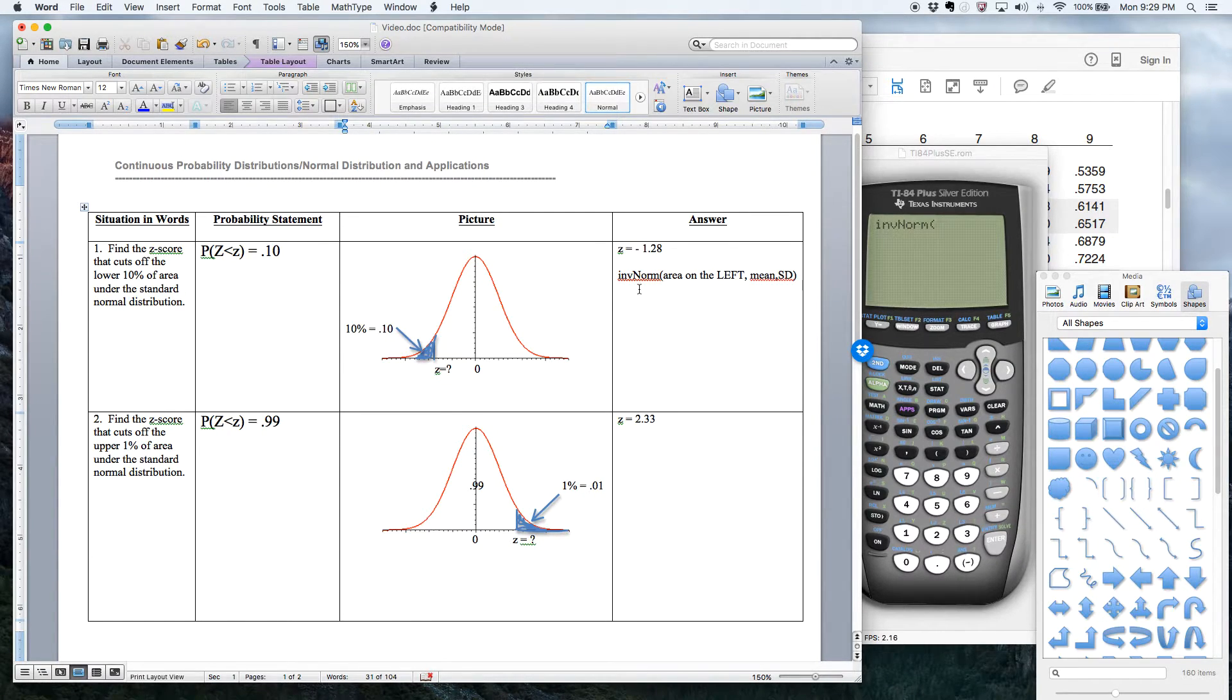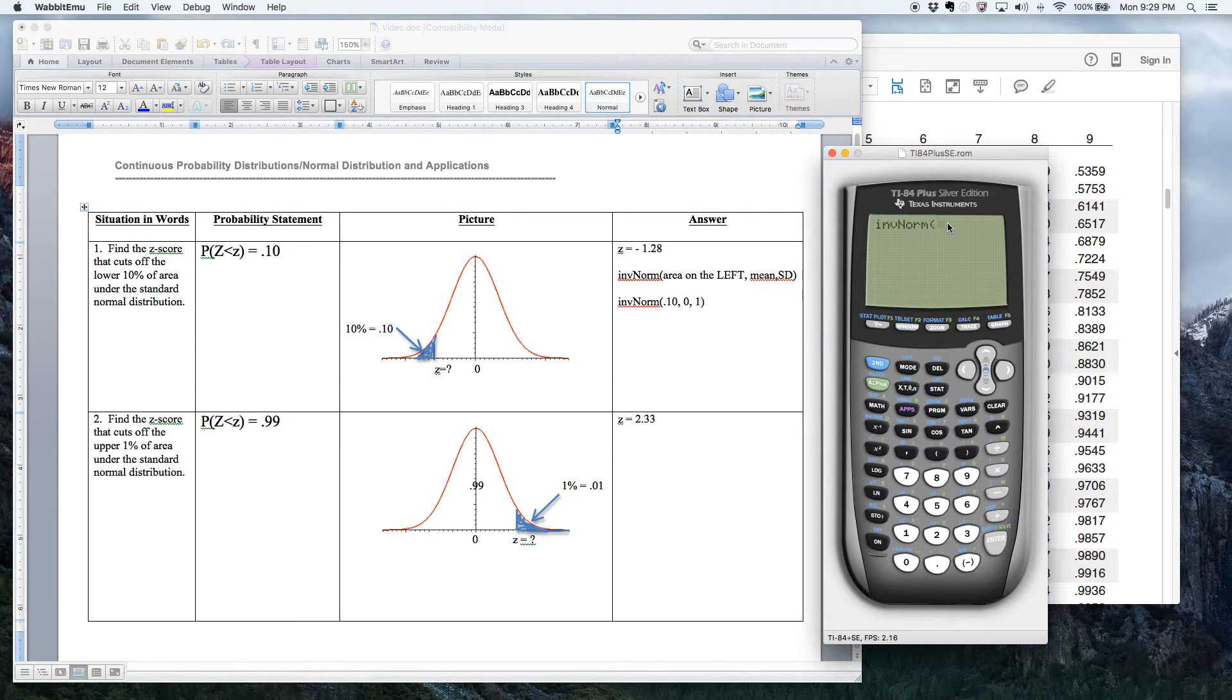All right, so let's work this first problem here using the inverse norm operation. All right, so what would that look like? Well, it's not too bad, inv norm, of area on the left. All right, so area on the left of what? Well, obviously, area on the left of the z-score. So what is the area on the left? Well, it was 10%. All right, so I'll pop in 10%, which is .10, and I'll hit a comma, and now it needs the mean, which is always zero for the standard normal distribution, and then it needs the standard deviation. All right, so area on the left, comma, mean, comma, standard deviation. Let me type it in the calculator, .10, comma, zero, comma, one. Close my parentheses. Now, we got the answer. It's about negative 1.28, so that's what I'm expecting to see here when I say, go get me the answer.